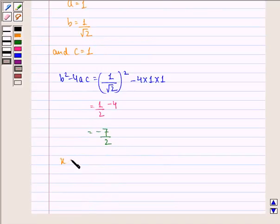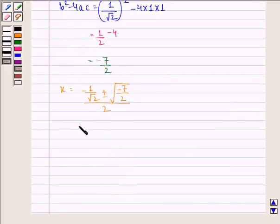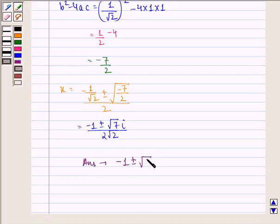Therefore, x becomes minus 1 by root 2 plus minus of root of minus 7 by 2, the whole divided by 2. Therefore, our answer to this question is minus 1 plus minus of root 7 by 2 root 2.